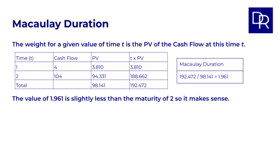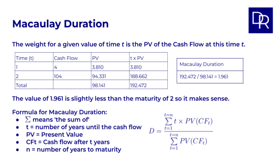Now let's have a look at the formula for Macaulay duration. It can look a bit intimidating at first, but it is just concisely saying what we have done in the steps in our example, so there is nothing new here. The symbol you see is the Greek capital letter sigma, which means the sum of. In this formula, it tells us to calculate the expression next to it for each time period t from 1 up to n — the total number of periods to maturity — and then add all these individual results together. In our example, n is equal to 2, so this is just saying calculate the expression for t equals 1 and for t equals 2, and then add them up.